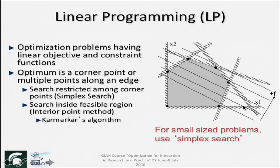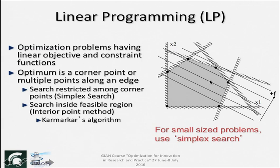Usually in linear programming it is assumed that all variables take non-negative values, so you are always looking at the first quadrant. These two axes define the boundary, and other constraints determine how the region looks. When you have only linear constraints, you get a convex region — basically a polygon. There will be many corner points, and the interior region is feasible. The feasible region is the inside region, and the points on the constraint boundaries are the edges.